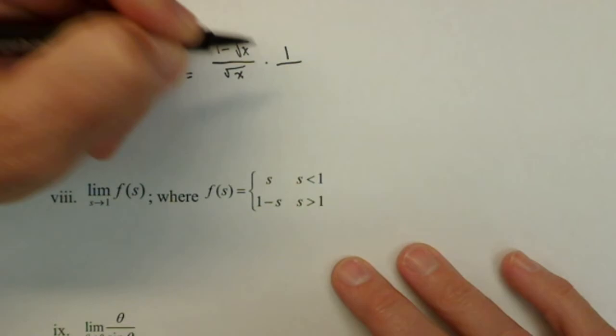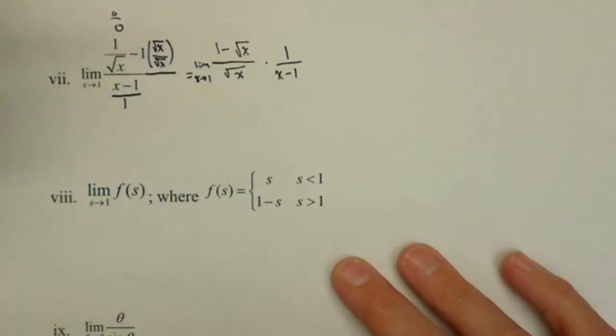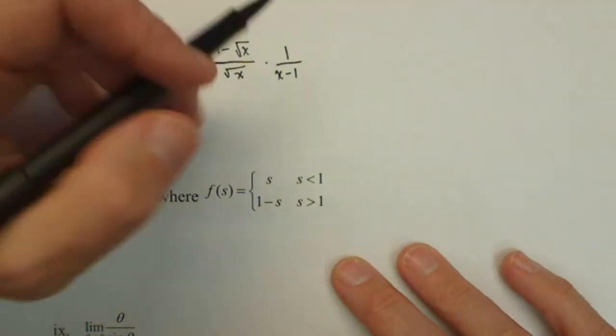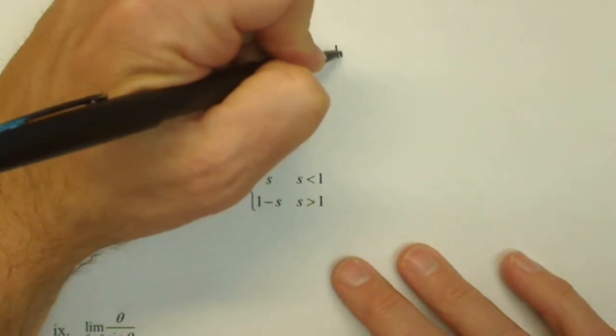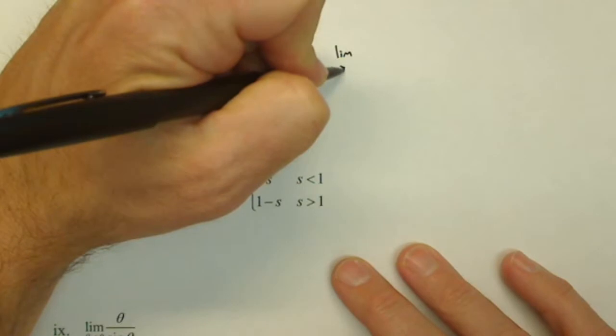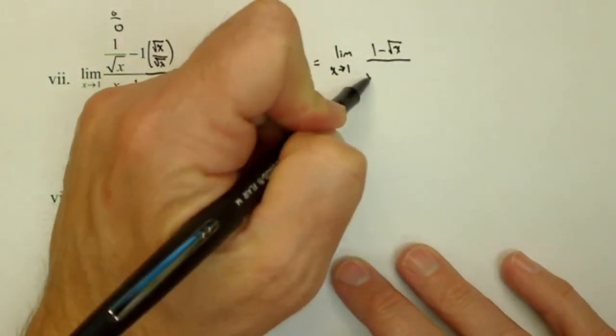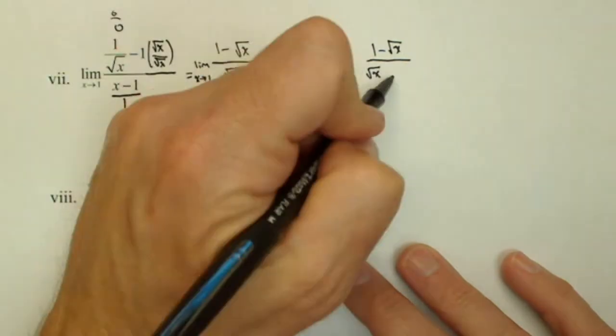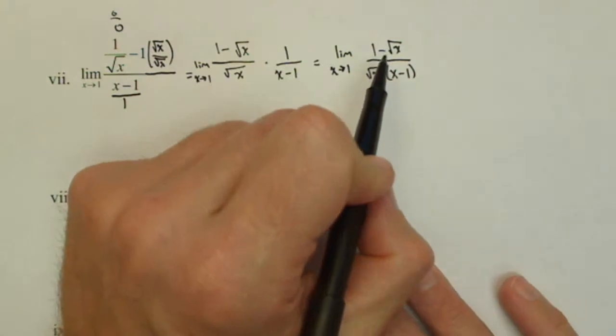I'm going to have times 1 over x minus 1. Now, again, I'm still doing the limit as x goes to 1, so I should keep writing that up front until we actually take the limit. So I have limit as x approaches 1 of 1 minus square root of x over square root of x times x minus 1.